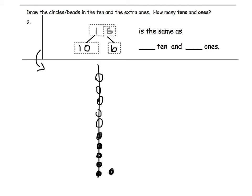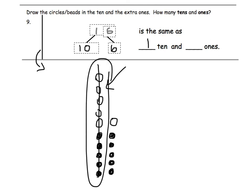Eleven, twelve, thirteen, fourteen, fifteen, sixteen. So in our answer, sixteen is the same as one group of ten and six ones.